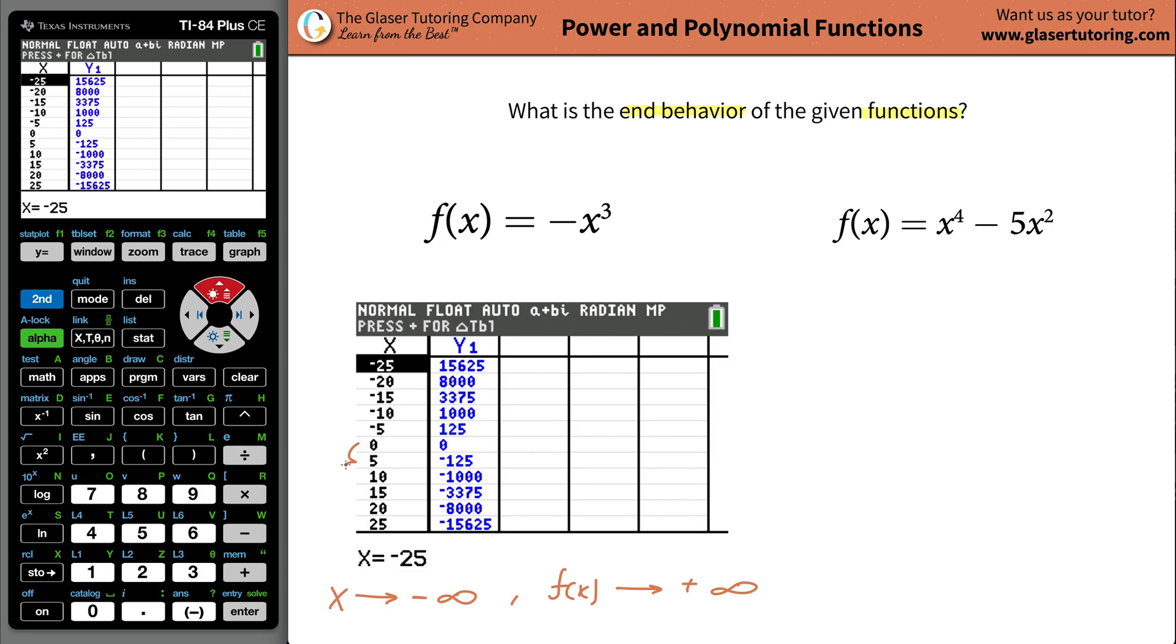And then we could also realize the same trend happens in the opposite way, except as x becomes now larger in the positive direction, the y value is becoming more and more negative. And we're going to see that trend continue. So as x goes to now positive infinity, the f of x, or the y value, will go to negative infinity. So that's kind of the end behavior, that's what they mean by end behavior, what happens at the ends. You can use the table, it's kind of nice, but you can also think about it a little bit by just plugging in the values into the function.